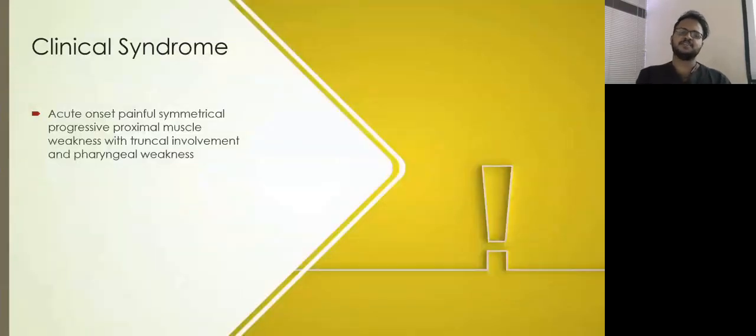Clinical syndrome: acute onset, painful, symmetrical, progressive, proximal muscle weakness with truncal involvement and pharyngeal weakness. Truncal involvement because he found it difficult to sit up by himself and also turn from side to side on the bed.